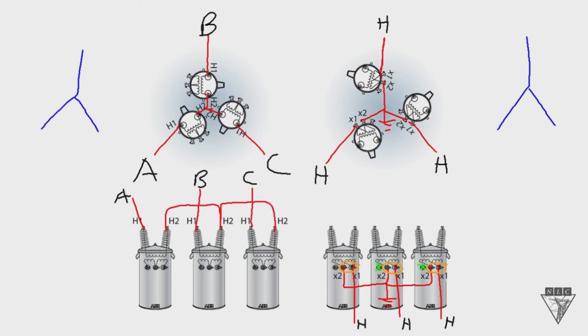Well, when you do that, when you're only utilizing two of the secondary bushings, you need to parallel the secondary coils together. If you don't parallel the secondary coils together, then you're not going to utilize the full KVA rating of the transformers.